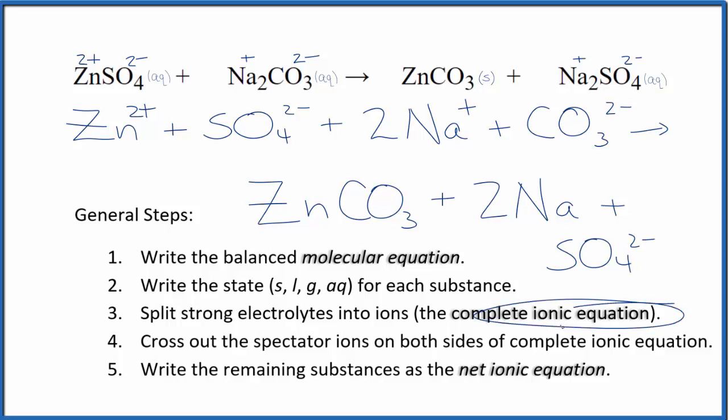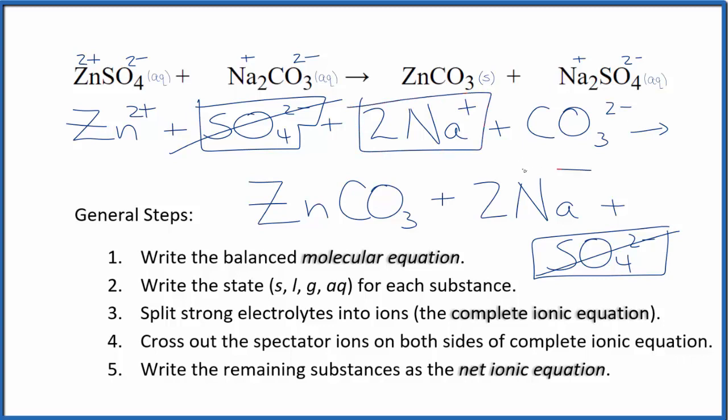That gives us the complete ionic equation. Now we'll cross out spectator ions. They're on both sides of the complete ionic equation. So I have my reactants on top, then I have my products. I can see I have a sulfate ion in the reactants here, and again in the products. That's a spectator ion. We're going to cross that out. Two sodium ions in the reactants and two sodium ions in the products. We can cross those out.